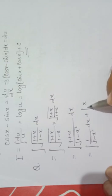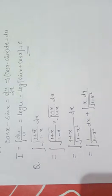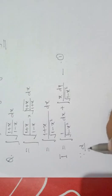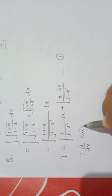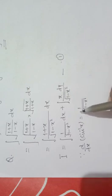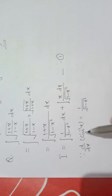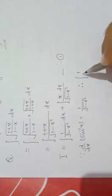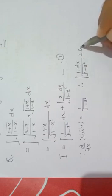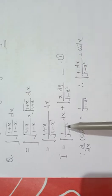The expression separates into two parts: x upon under root 1 minus x² dx. You know the differentiation of sine inverse x is 1 upon under root 1 minus x². So the integration of 1 upon under root 1 minus x² is sine inverse x. This is also learned as a formula. Therefore integration of 1 upon under root 1 minus x² dx is sine inverse x, and we have obtained the value of the first integration.